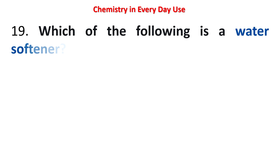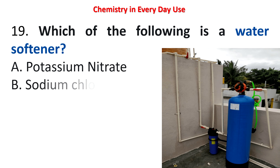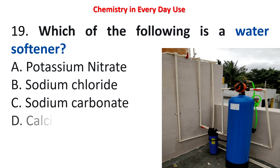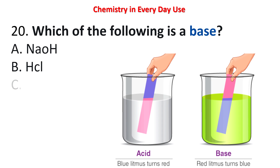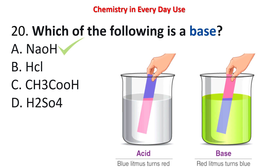Next question: which of the following is a water softener? Options: potassium nitrate, sodium chloride, sodium carbonate, calcium chloride. The answer is sodium carbonate. Next question: which of the following is a base? Options: NaOH, HCl, CH3COOH, H2SO4. The answer is NaOH. Remember for the litmus test: acid turns blue litmus red; a base turns red litmus blue.